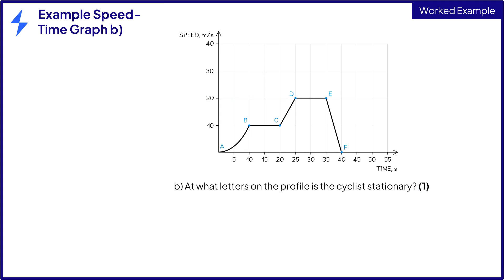Part B asks, what letters on the graph is the cyclist stationary? Also for one mark, look at the graph carefully. Sections B and C and D and E are horizontal lines. On a speed-time graph, horizontal lines mean the cyclist travels at a constant speed. So the only times when the cyclist has stopped are at the start and end of the motion, where the speed is equal to zero at the bottom of the vertical axis, so A and F are the only letters where the cyclist is stationary. One mark.